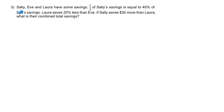Question 3. Sally, Eve and Laura have some savings. A third of Sally's savings is equal to 40% of Eve's savings. Laura saves 20% less than Eve. If Sally saves $30 more than Laura, what is their combined total savings? Step 1, change all the percentages to fractions. 40% is 2 out of 5, and 20% is 1 out of 5. This is quite similar to Question 1. We're going to focus on the second sentence: a third of Sally's savings is equal to 2 fifths of Eve's savings.